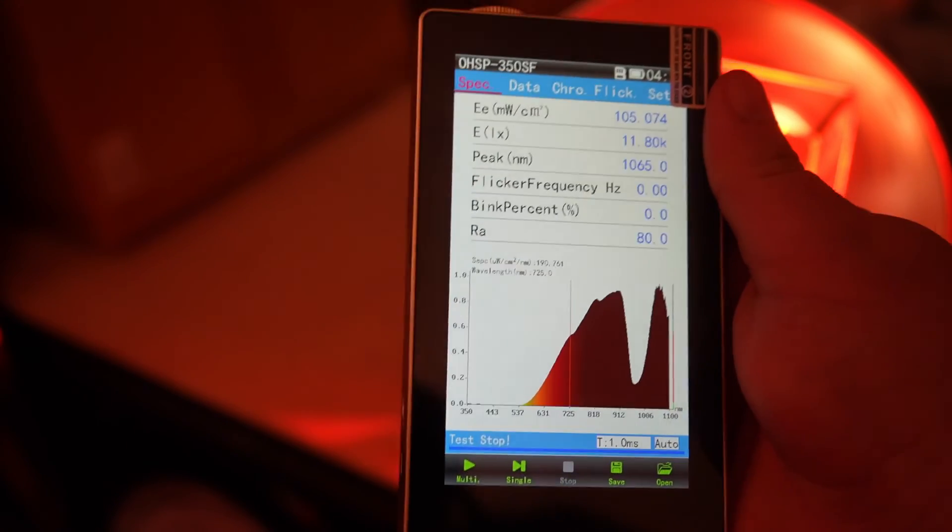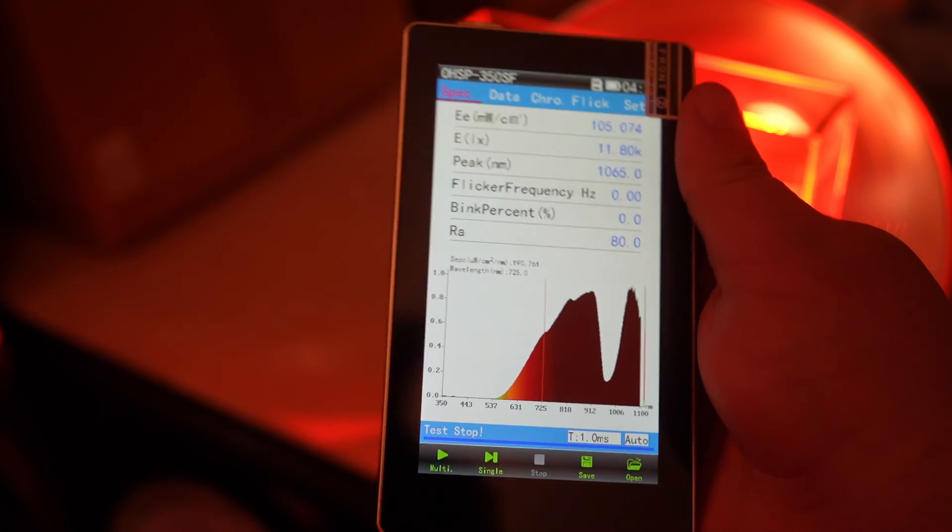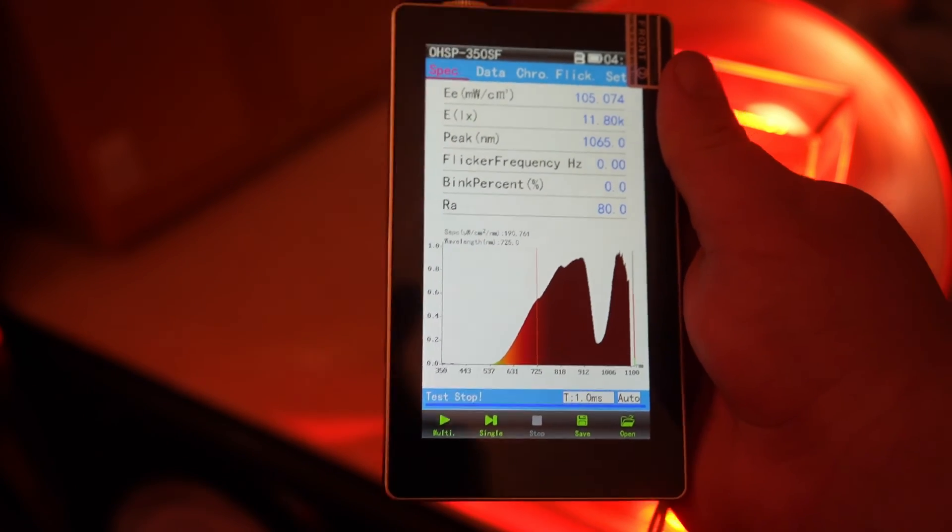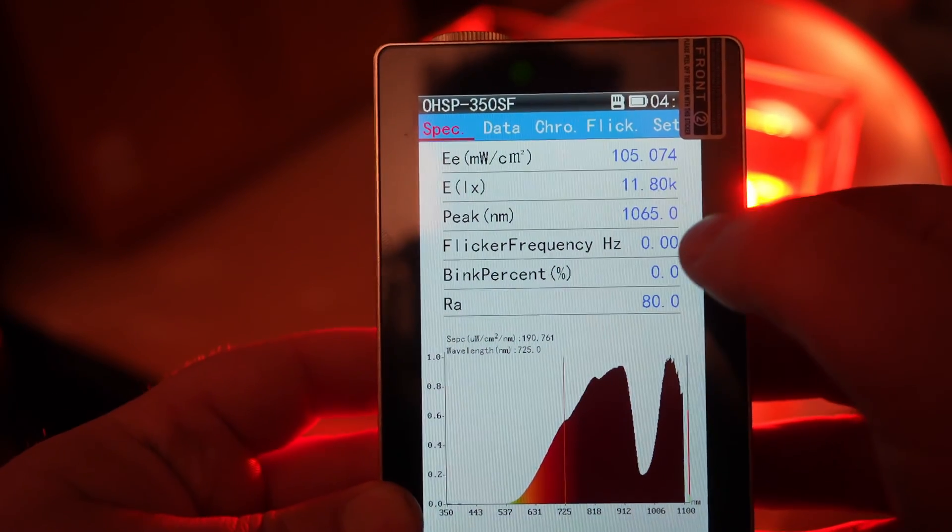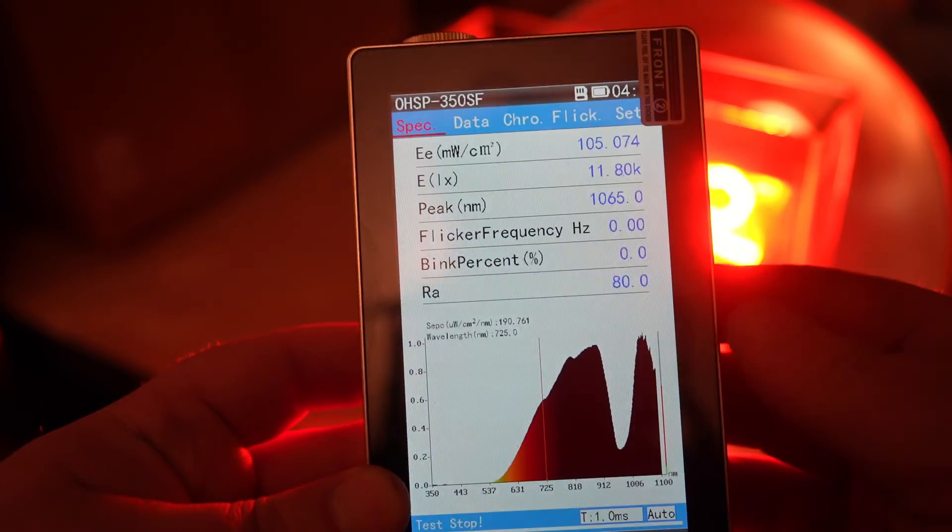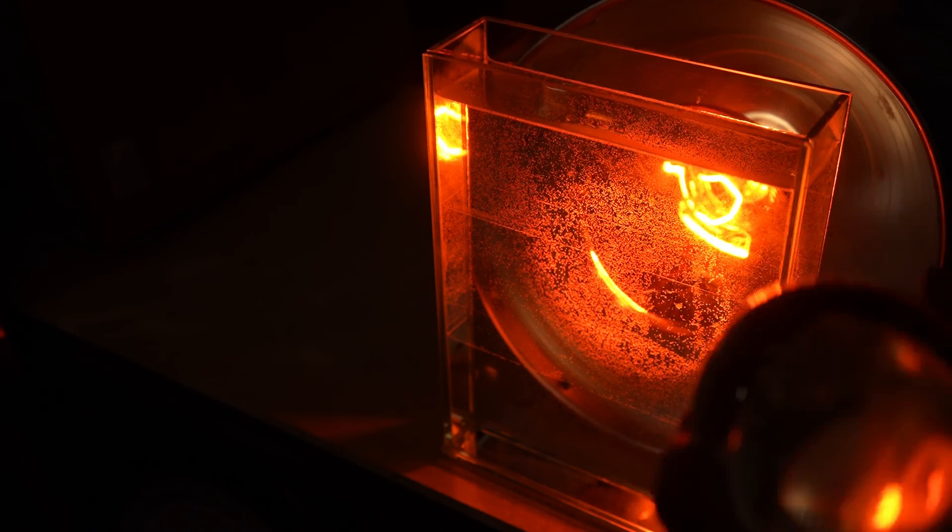Otherwise, if you just have a panel that you're some inches away with a low percentage of 1060, are you really getting that deep penetration that's being promised? And interesting, the peak does tell us it's 1065, so it's right in that sweet spot that a lot of people want. And so that's a hack for getting deep penetrating 1060 wavelength.